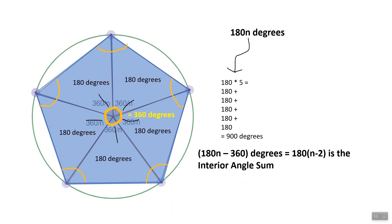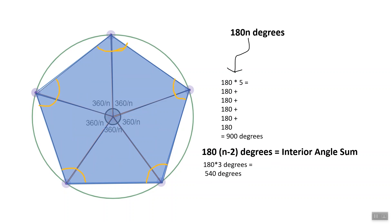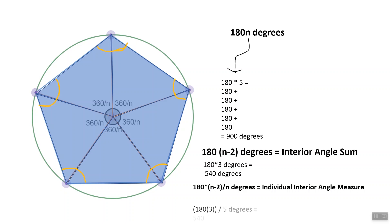In our pentagon example, this would be 180 times 3, which is 540 degrees. Also, since every angle in a regular polygon is equal by definition, and since there are n angles in an n-sided polygon, the measure of each interior angle is simply the interior angle sum divided by n. For our pentagon example, this would be 180 times 3 divided by 5, or 108 degrees.